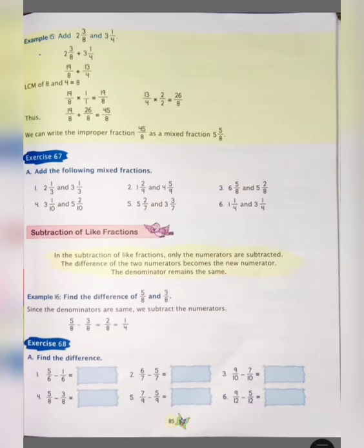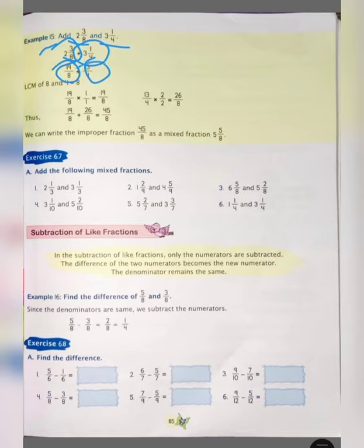Example 15: add 2 and 3 upon 8, and 3 and 1 upon 4. First of all, we will convert to improper fractions. So now we get 19 upon 8 plus 13 upon 4. Now, LCM of 8 and 4 is equal to 8.